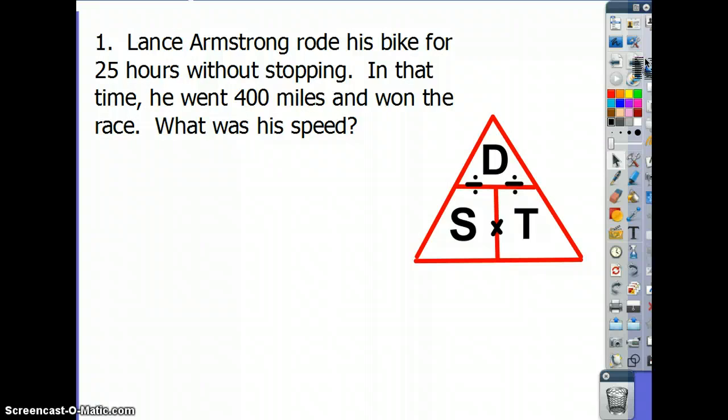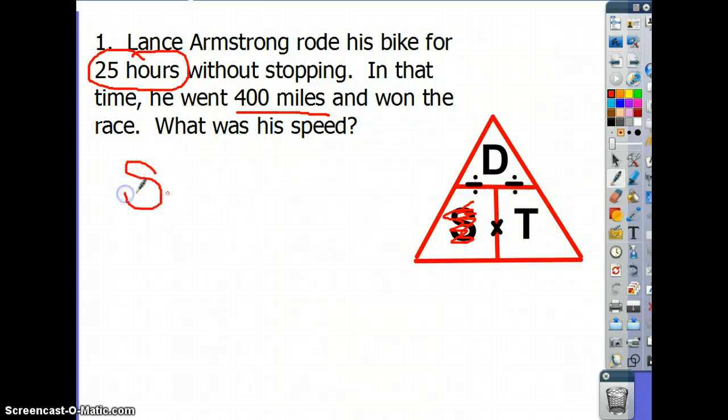So here's the first problem, number one, on your homework for OP43. Lance Armstrong rode his bike for 25 hours without stopping. Before I move on, I have to recognize this number as a time. Clock's around, so we circle this. In that time, he went 400 miles. 400 miles is a distance, so I underline it, and won the race. What was his speed? Since they asked me for the speed, I cover up the S, and what I have left over is D over T. So I know that the problem needs to be set up like this. Speed equals distance divided by time.